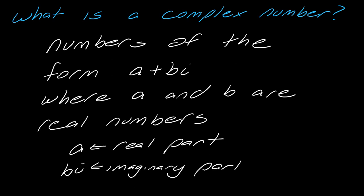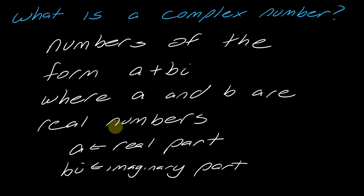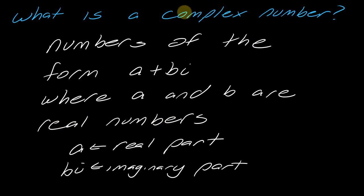A lot of times when we talk about algebra, we talk about the real numbers. The real numbers are basically anything you can think of — it can be a really weird number like pi, or it could be a fraction, a whole number, or an integer. A lot of times with algebra, we say that the real numbers are the biggest number set that you can get. But then we can open up a whole new set of numbers called the complex numbers, in the form a plus bi.